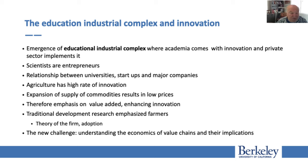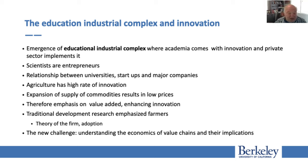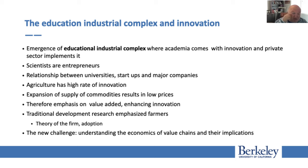A key starting point is the notion of the educational industrial complex — where universities and academia come up with innovation and the private sector implements it. Scientists are often entrepreneurs; even Sony was started by a professor. There are three types of organizations: universities, start-ups, and major companies that are interactive. Universities do basic research, it moves to small companies, discoveries move to start-ups, and then big companies expand and sell. Countries that don't have this type of system are not doing well — the US, China, Israel, and some European countries have this combination. I am a big believer in the need to develop high-value universities and research.